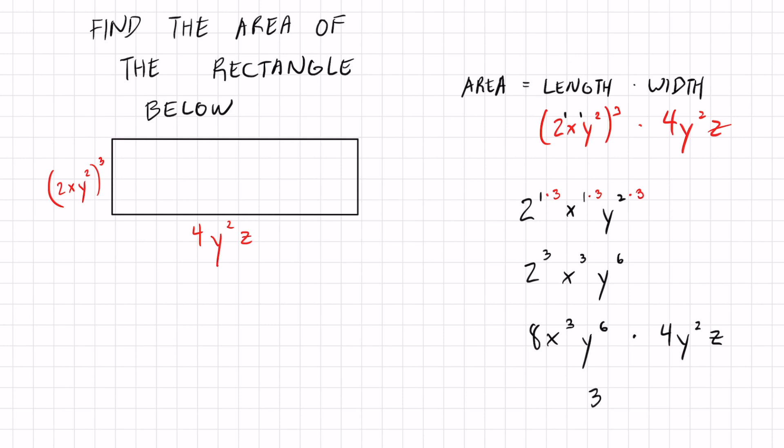Eight times four is 32 and then just go alphabetically. There's nothing else with an x variable on there. So that's just x to the third. y6 matches with y2. Add the exponents is the rule. y8 and z.